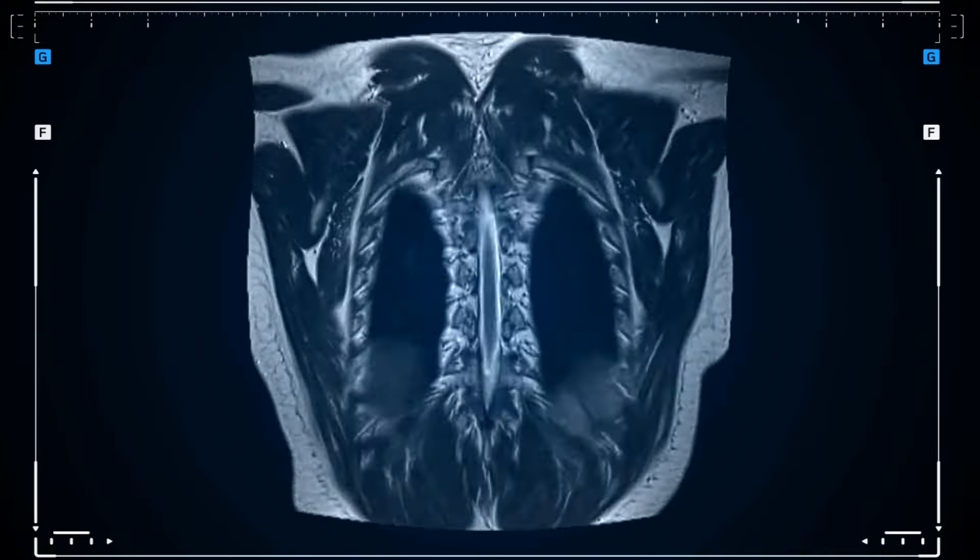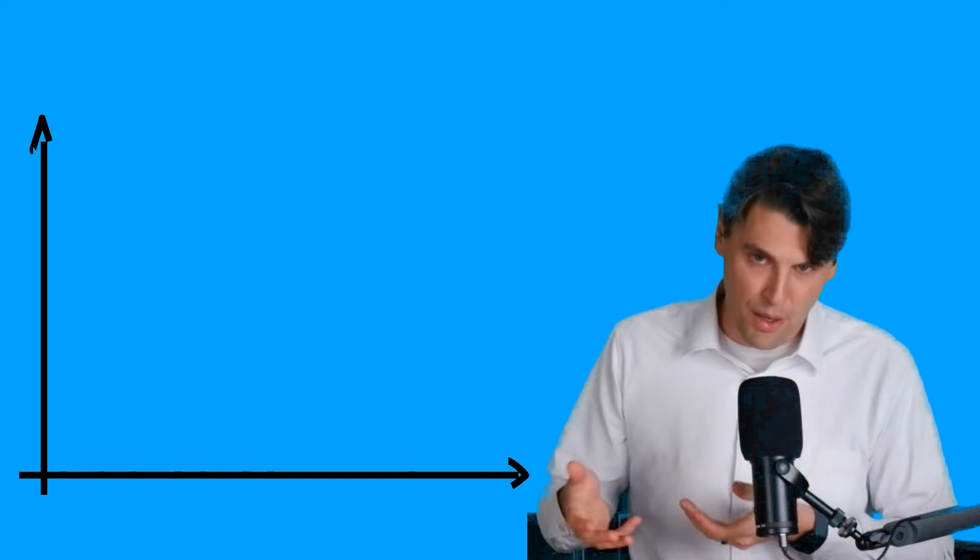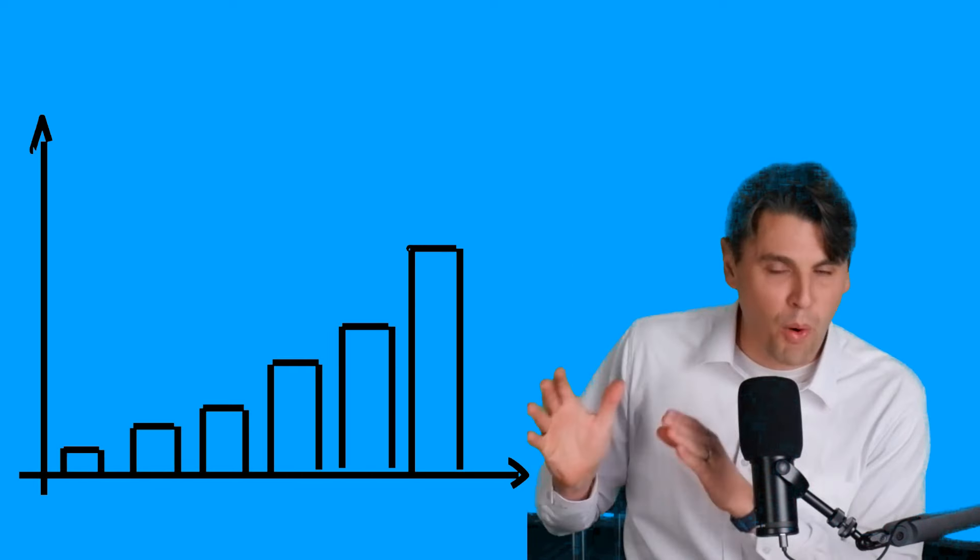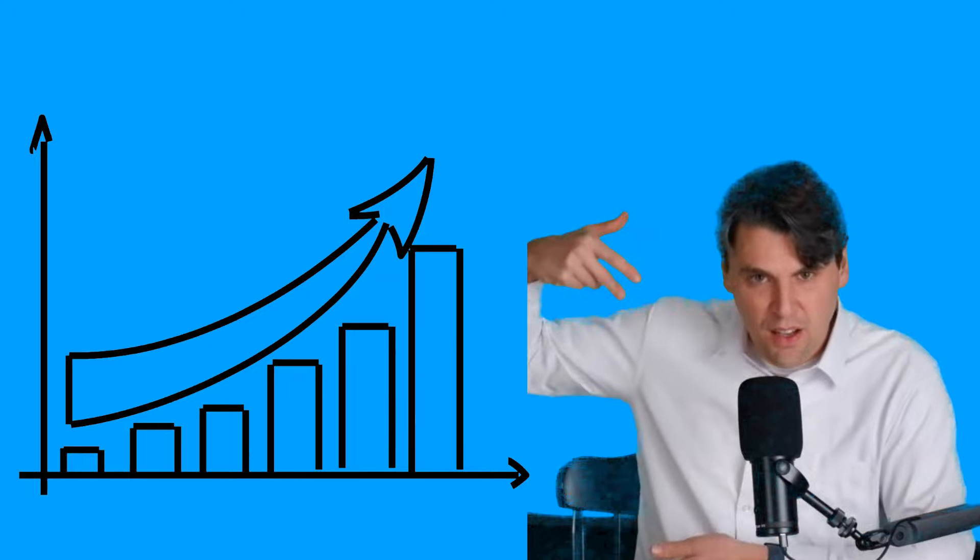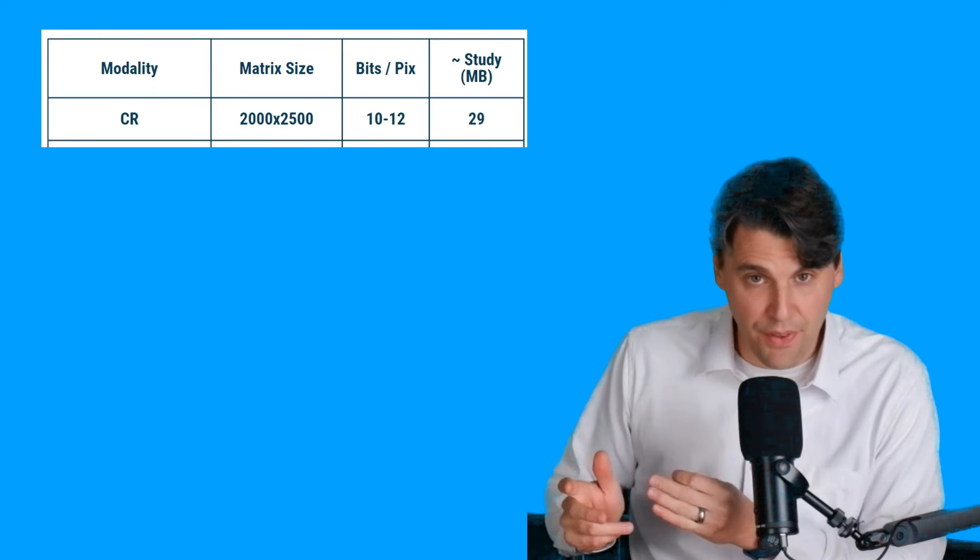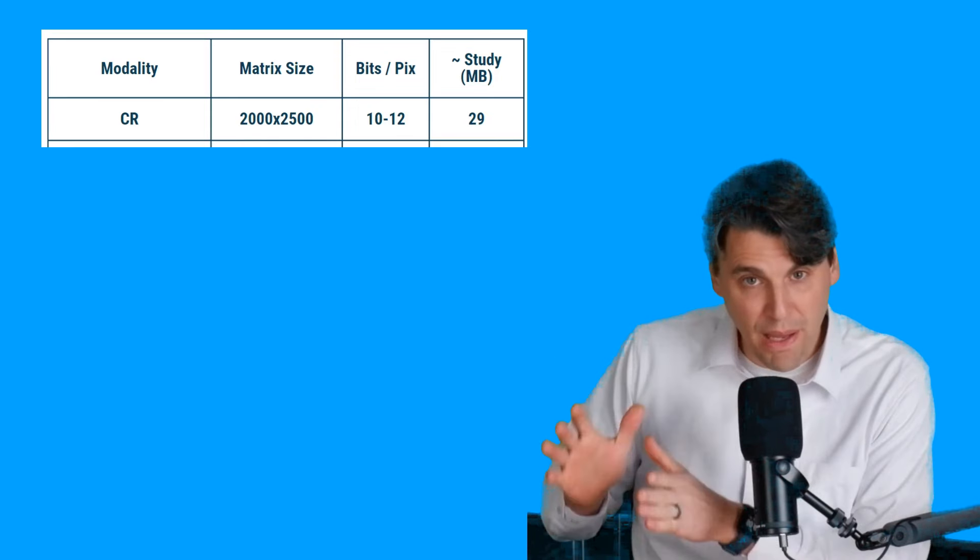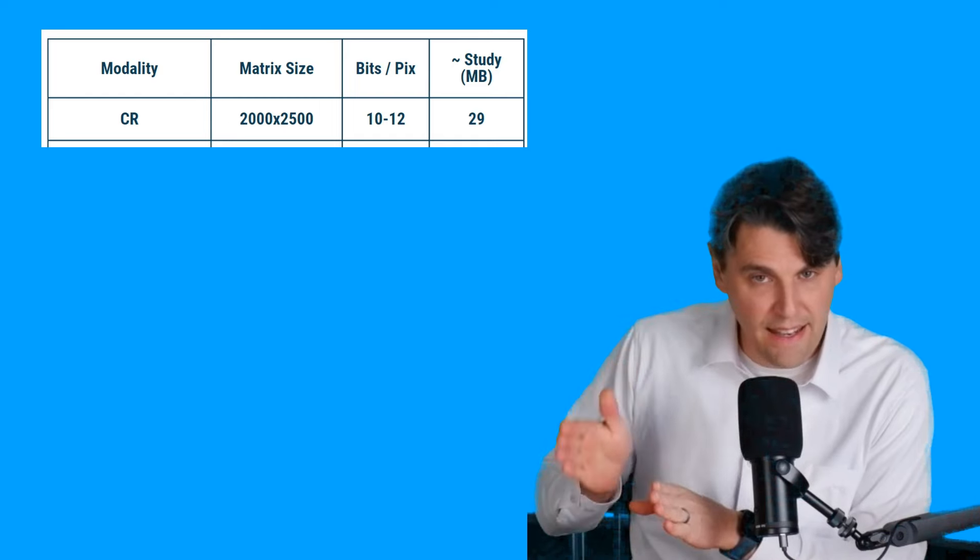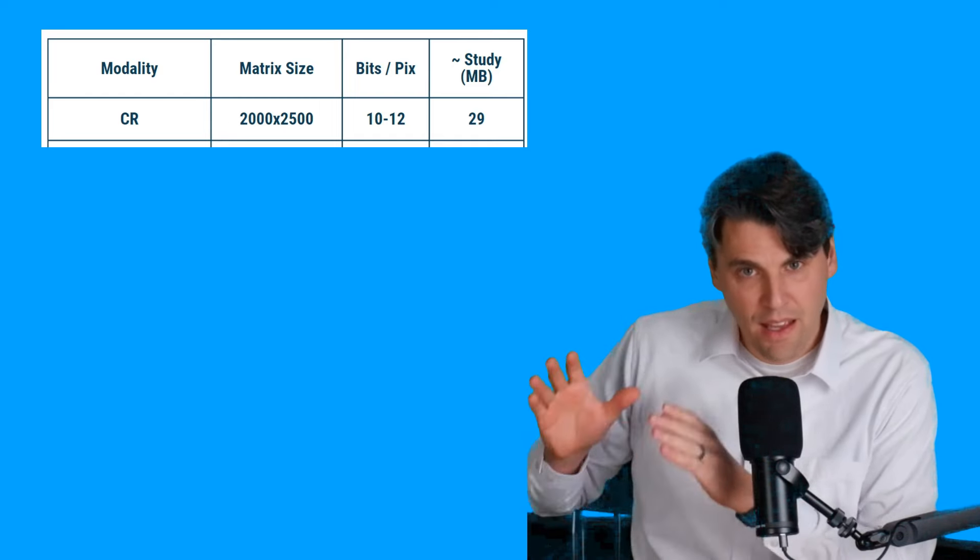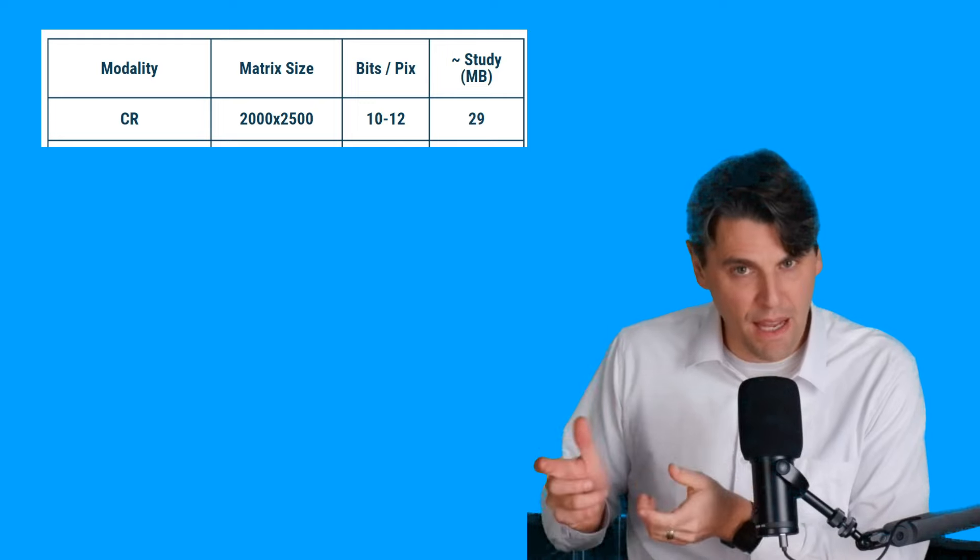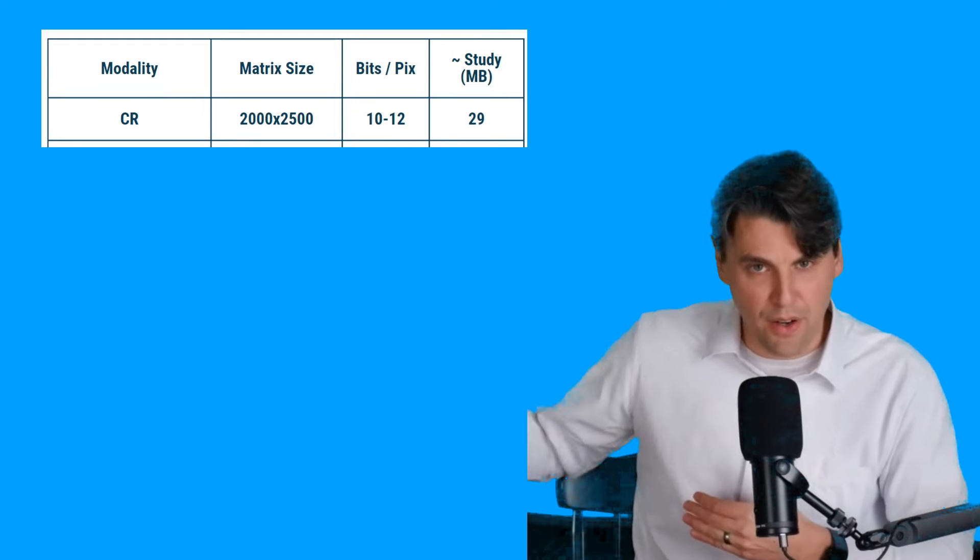These are just representative values of the given modalities and the size of the actual images that are being saved actually changes over time. And it's pretty much always going up. We're always saving more information. When CT, we're making finer slices and those slices were sampling with higher matrices over time. A CR system or computed radiography system typically going to have about 2000 by 2500 pixels. Each is stored with between 10 and 12 bits. And then a typical exam has about 29 megabytes of storage when you count up all the different images that are taken.